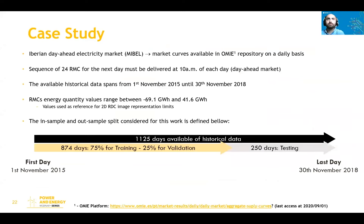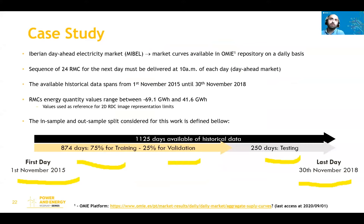For the case study, we considered the Iberian day-ahead electricity market. Historical data ranges from 1st November 2015 to 13th November 2018, making 1,125 days of available data. We divided this into training, validation, and test datasets: the training data is used to train the models initially, validation for optimization of network parameters, and the test data is a pure out-of-sample period.